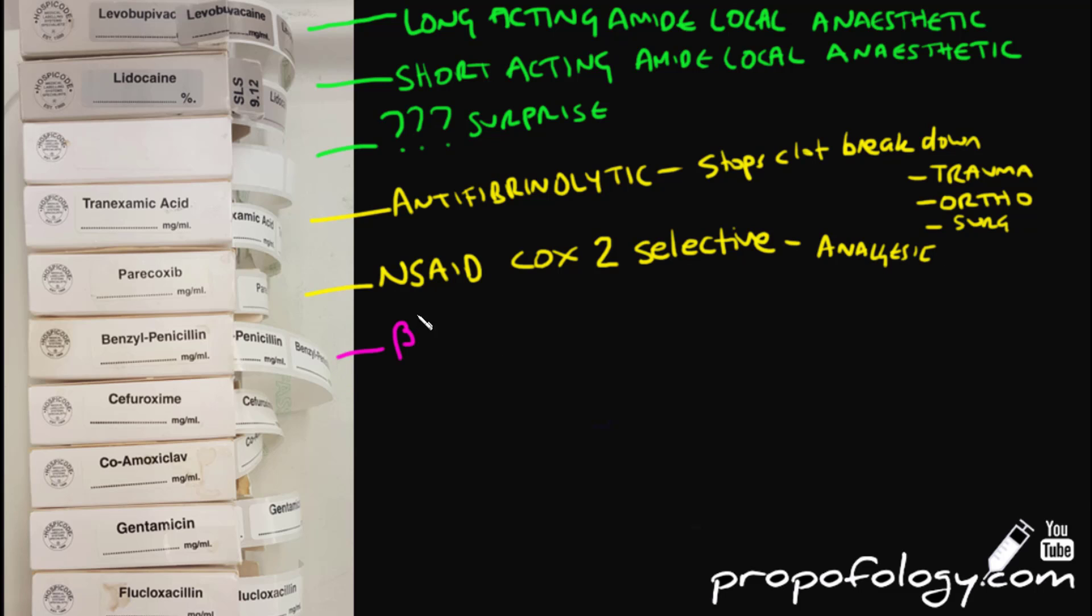The rest of the drugs we're going to cover now are all antibiotics. Benzylpenicillin is a beta-lactam antibiotic and it's good against gram-positive organisms. Unfortunately, a lot of bacteria now are resistant to benzylpenicillin. Cefuroxime is a second-generation cephalosporin drug. It's broad-spectrum and is active against gram-positive and gram-negative organisms. Interestingly enough, it crosses the blood-brain barrier unlike other second-generation cephalosporins.